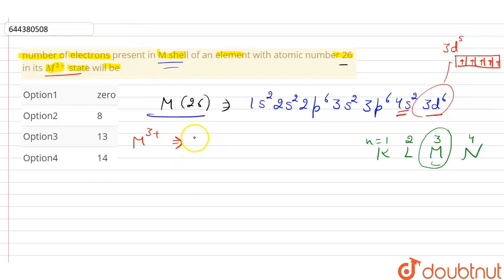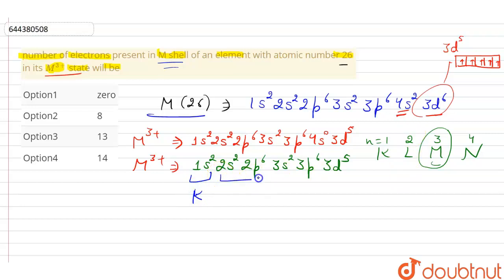Electronic configuration will be 1s² 2s² 2p⁶ 3s² 3p⁶ 4s⁰ 3d⁵. You can rewrite it as M3+ equals 1s² 2s² 2p⁶ 3s² 3p⁶ 3d⁵. Now we know that for n=1 is K shell, n=2 is L shell, and for n=3 the shell will be M. So this is the M shell.